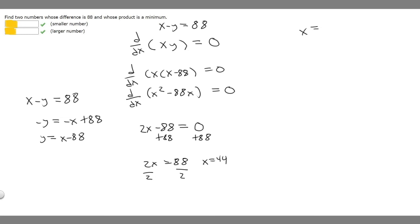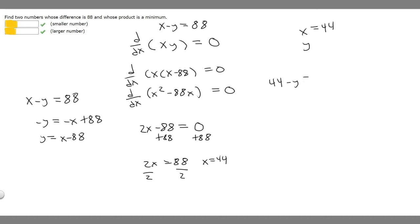We got one of them, but we need y. All we have to do is plug x into the constraint equation. So 44 minus y equals 88. If we subtract 44 from both sides, we get minus y equals 44, and multiplying both sides by minus 1 gives y equals minus 44. So our smaller number is minus 44 and our larger number is 44.